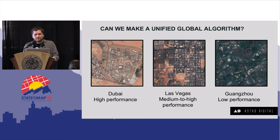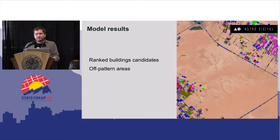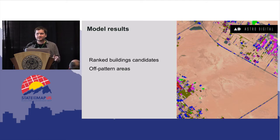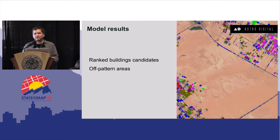By this point, this kind of algorithm and model produces two types of output. First, ranked building candidates, which are vector data with a ranking indicating how confident the model is that an area is a building. Second, changed pattern areas, where we know something has changed — we may not know if it's a building, but we know the change is significant.